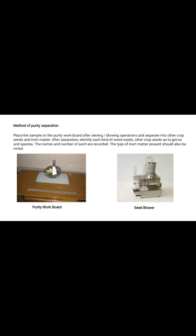Method of purity separation: place the sample on the purity workboard after sieving and blowing operations, and separate into pure seeds, other crop seeds, weed seeds, and inert matter. After separation, identify each kind of weed seed, other crop seed, and species. The names and numbers of each are required, and the type of inert matter present should also be noted. The percentage of each component is calculated as: percentage of component = (weight of individual component / total weight of all components) × 100. If the gain or loss between the weight of the original sample and the sum of all components exceeds 1%, another analysis should be made.